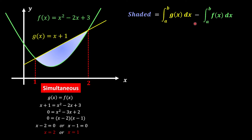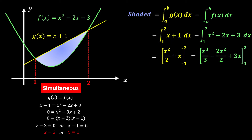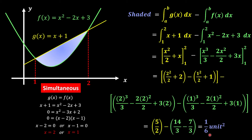If you don't want to merge the equations together, you can do it individually. For the line: x squared over 2 plus x, from 1 to 2. Then minus the curve integral: x cubed over 3 minus 2x squared over 2 plus 3x, from 1 to 2 as well. It's more complicated because you settle the upper limit minus lower limit for the straight line first, then subtract the same for the curve. But you arrive at the same answer.